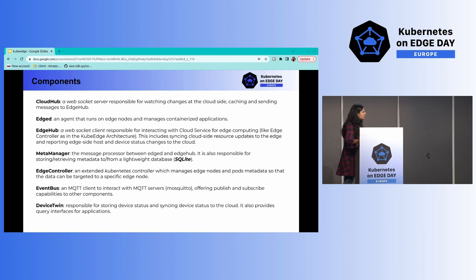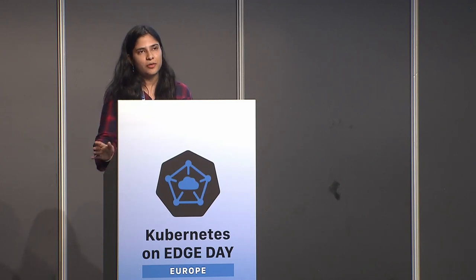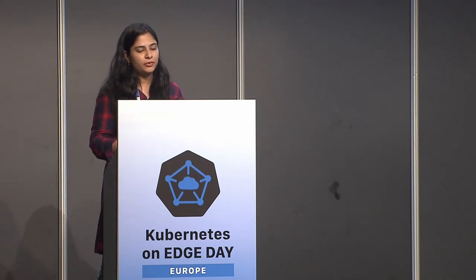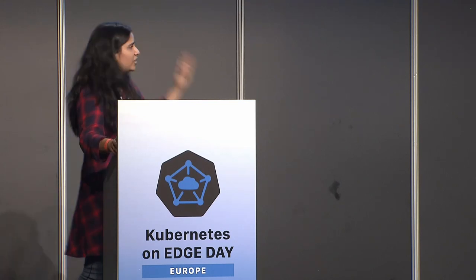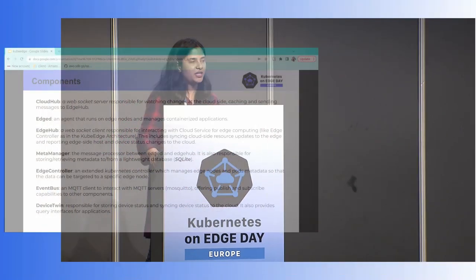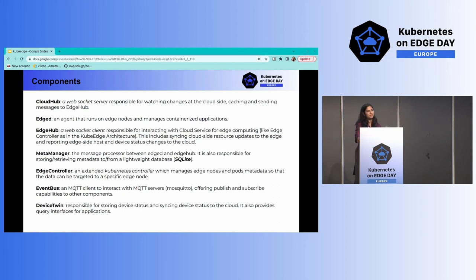Device Twin takes care of syncing device status and data. To summarize: on the cloud side we have controllers and Cloud Hub for communication; on the edge side we have Edge Hub for communication, Meta Manager for syncing and database retrieval, a SQLite database for caching edge node metadata, a Mosquito broker, Device Twin, and Event Bus for device management. Applications and devices are both managed on the edge side — Device Twin and Event Bus focus on devices, while EdgeD focuses on Kubernetes resources like config maps and applications.